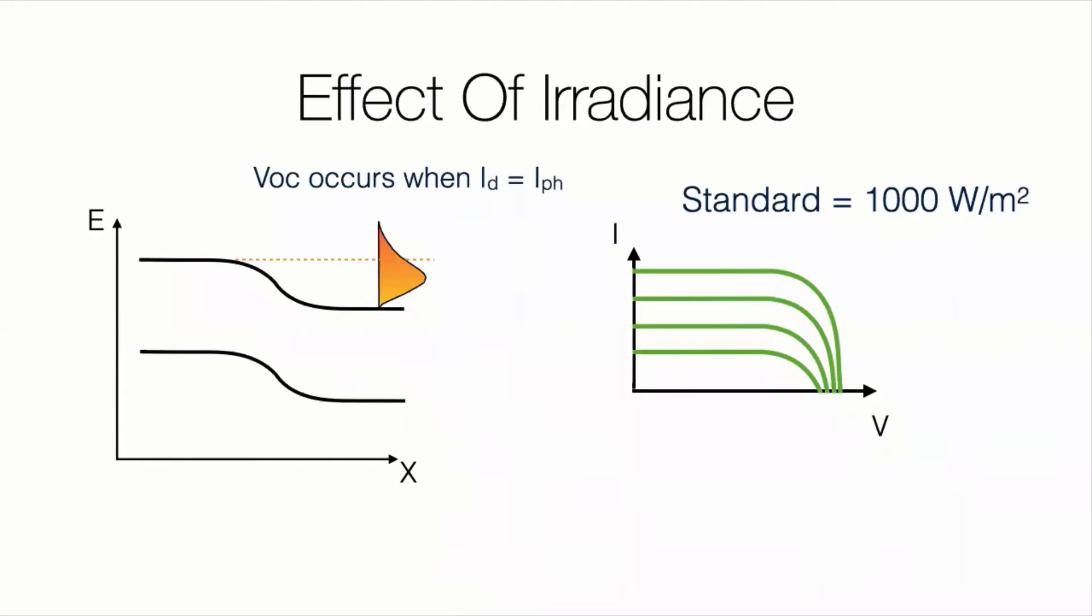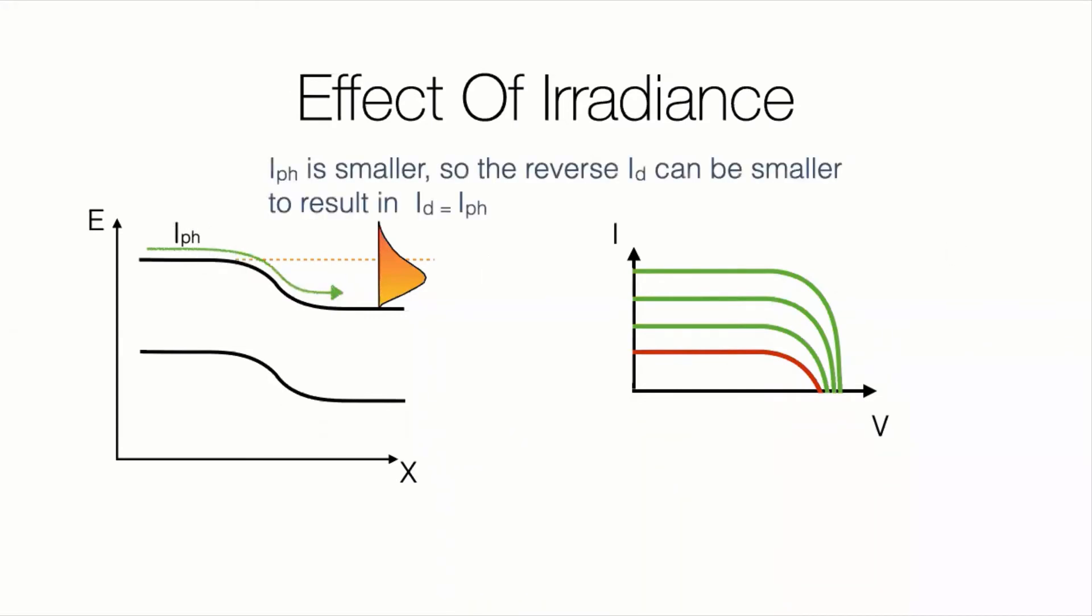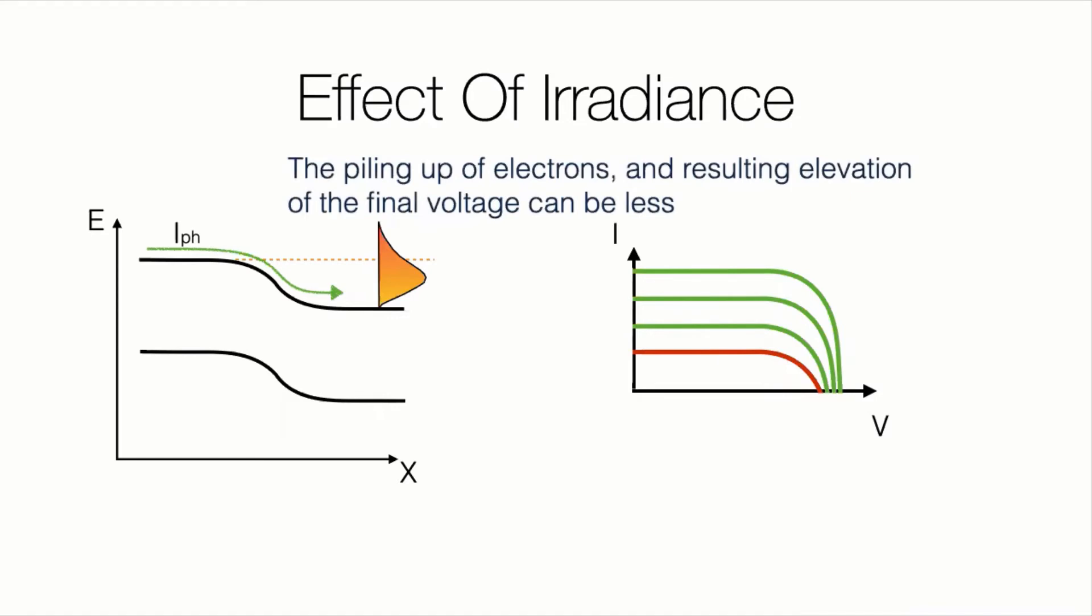Now, let's reduce the amount of light. So let's look at the red curve. So what's going on? We have less photocurrent in this case. Everything before, I always kept the photocurrent the same. But now I'm changing the amount of photocurrent. I'm reducing it a lot. So if I have less electrons flowing this way, I'm going to need less electrons flowing back in order to make the total zero. So if my photocurrent is smaller, so then the reverse current can be smaller to result in the two currents being equal.